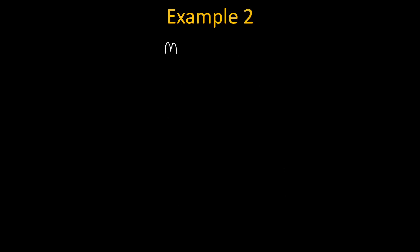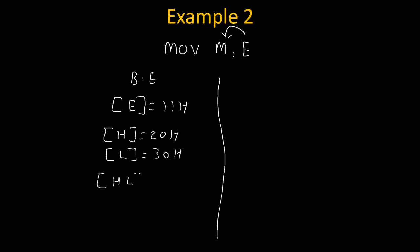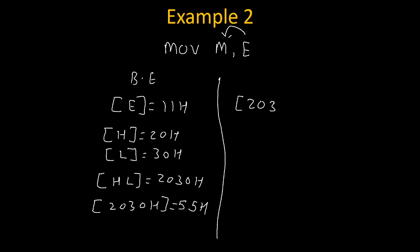Let's take one more example. Suppose the instruction is MOV M, E. Because of this instruction, the value of E will get copied inside M. Before execution, E is holding 11H. H is holding 20H, L is holding 30H. Therefore, HL pair is holding 2030H, and this 2030H will be treated as the address. On this 2030H address, let's say data is 55H. This content of E will get copied inside the memory. So the content of memory address 2030H will get changed and it will become 11H, which was the content of E register. All other values will remain the same.